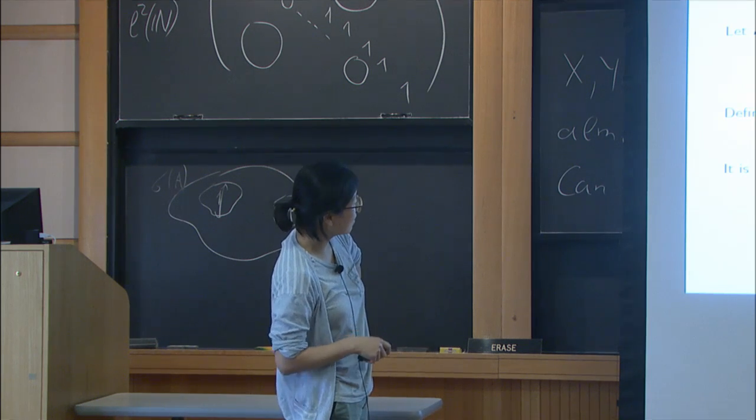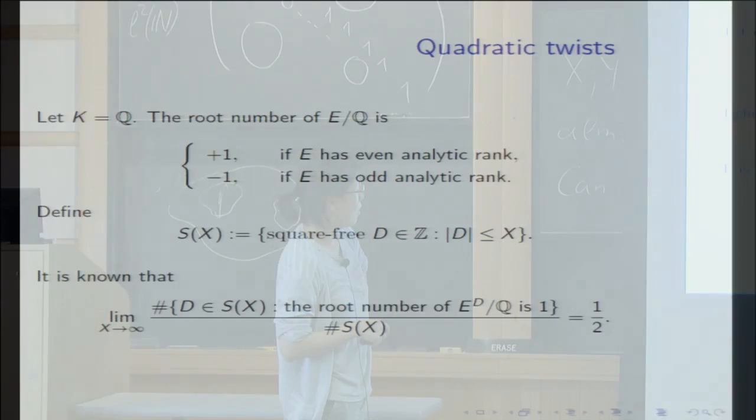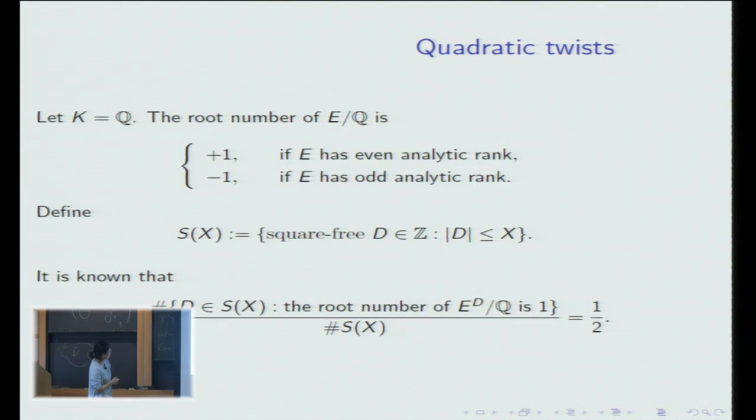It is well known fact that let E be an elliptic curve over Q then half of quadratic twists have root number one and about half of quadratic twists root number minus one.